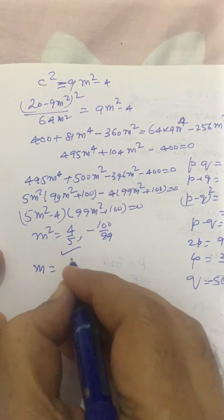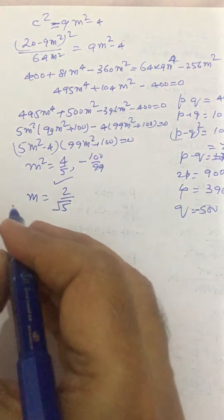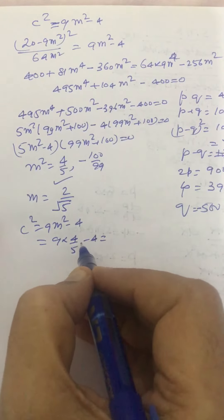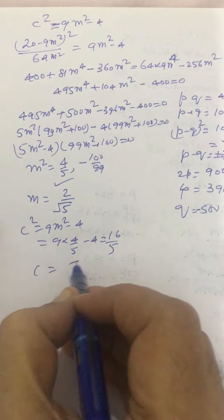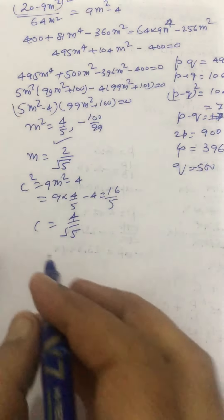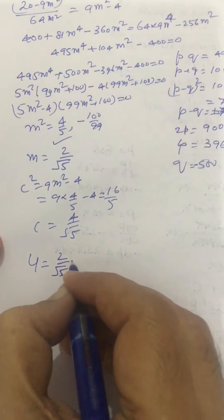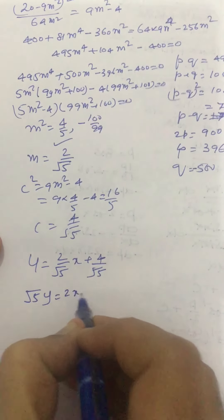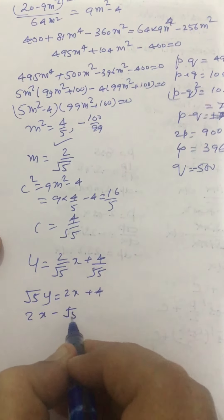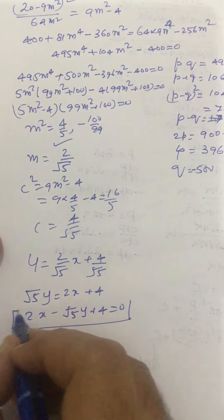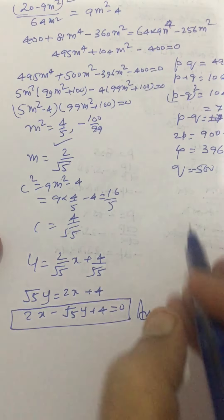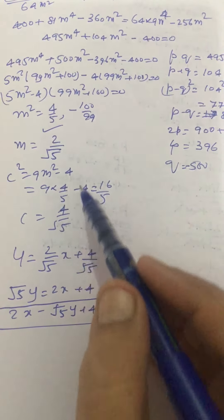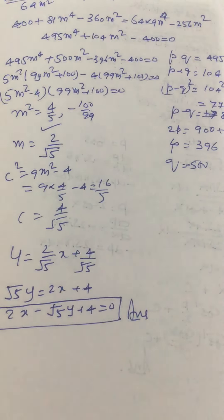With m = 2/√5, we find c² = 9(4/5) - 4 = 36/5 - 4 = 16/5, so c = 4/√5. The common tangent is y = (2/√5)x + 4/√5. Multiplying through by √5 gives √5·y = 2x + 4, or equivalently 2x - √5·y + 4 = 0. We take only the positive value of m since we need the tangent with positive slope.